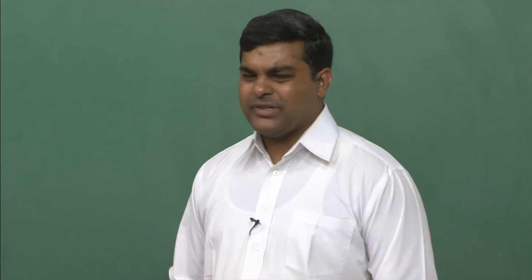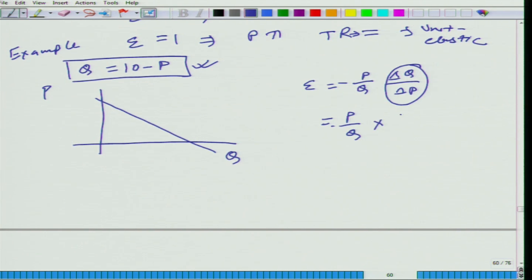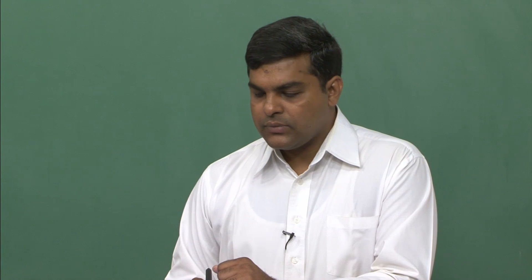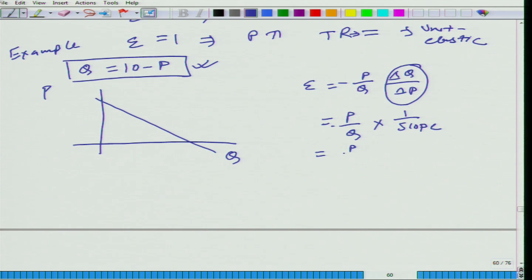Delta Q divided by delta P — for this specific function Q = 10 minus P, it is minus 1. But in general, delta Q by delta P is the inverse of the slope. So elasticity can also be written as (1 divided by slope) times (P divided by Q). How much is the slope here? It is minus 1. And P divided by Q is P divided by (10 minus P), which can be written as (10 divided by P) minus 1.